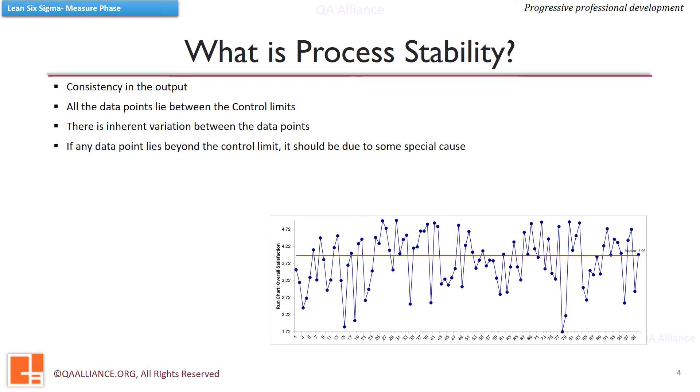We'll also learn about finding special causes and process instability by analyzing control charts and identifying any existing patterns in future lessons of analyze and improve phase. In a 6 sigma level process, there is a scope of 1.5 sigma shift over time, towards a specification limit, even when the process is stable.